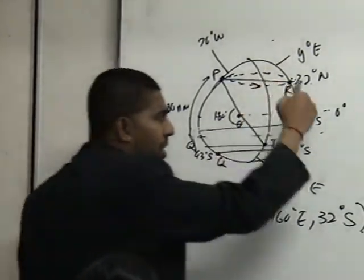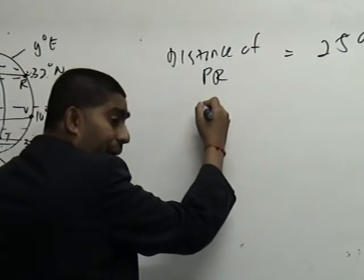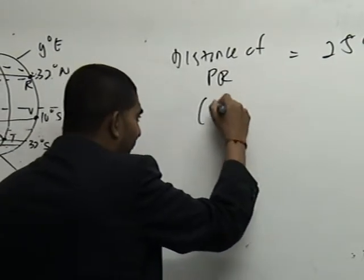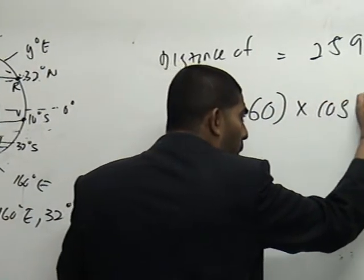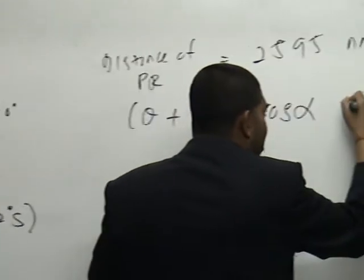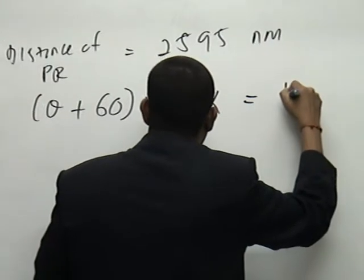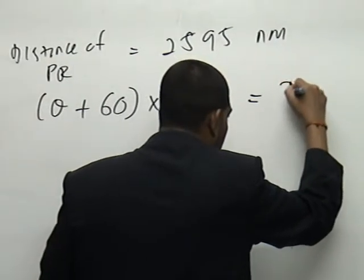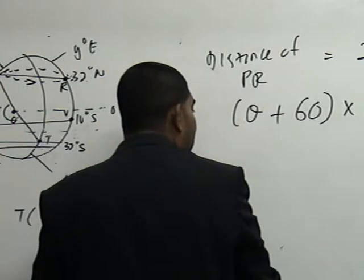So, for distance along the latitude, the formula would be θ × 60 multiplied by cos of the latitude. I call it alpha. And the distance already given to us. What is it? Here. 2595 nautical miles. Now, what is this theta?